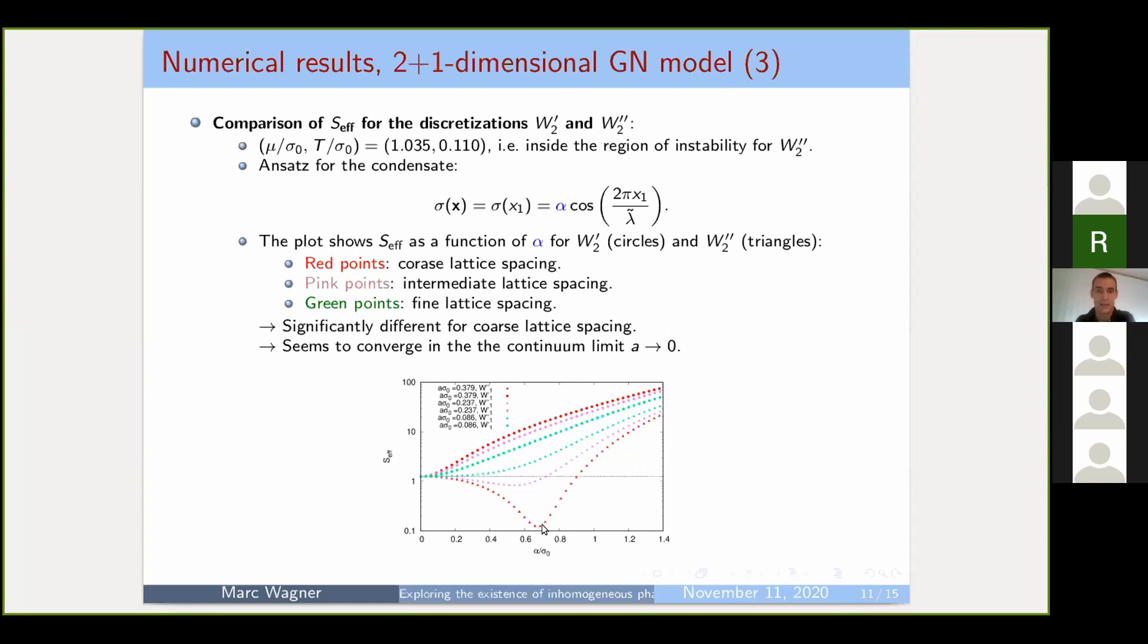When you decrease the lattice spacing, it's also nice to see the two effective actions come closer together. Of course, we cannot simulate lattice spacing zero, but it seems they converge to the same action. So it's confirmation that we seem to do everything right, but also interesting in my opinion because you can see that the discretization has a drastic effect on the effective action and therefore on an inhomogeneous phase.